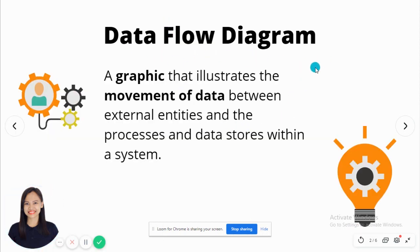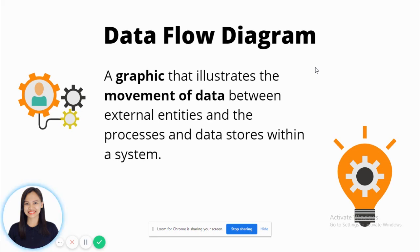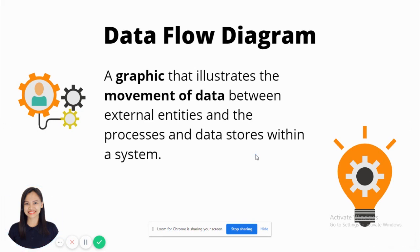Data Flow Diagram is a graphic that illustrates the movement of data between external entities, the processes, and the data stores within a system. It actually illustrates where the data comes from and what are the processes or what are the destinations of the data. This is actually important, especially if your system is highly database-driven.